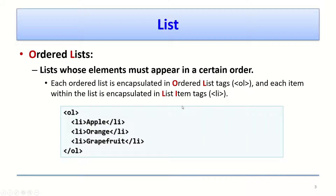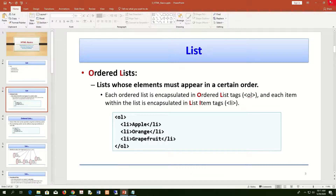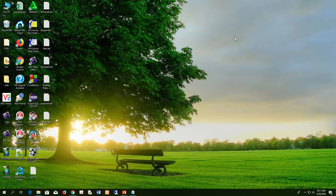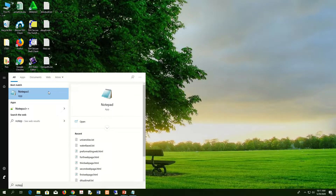Let's see how we can use the OL and LI tags. First, we have to mention the ordered list tag OL, and within the opening and closing OL tags we can insert items. The LI tag contains its content — the items. Items appear as the content of the LI tag. Let's open Notepad and see how to insert a list in our web page.